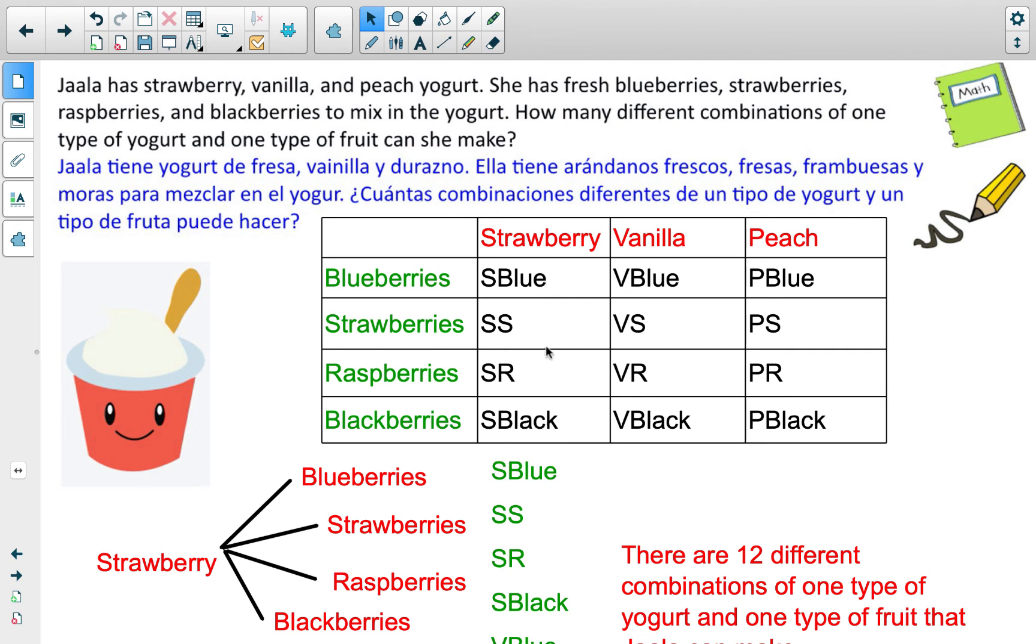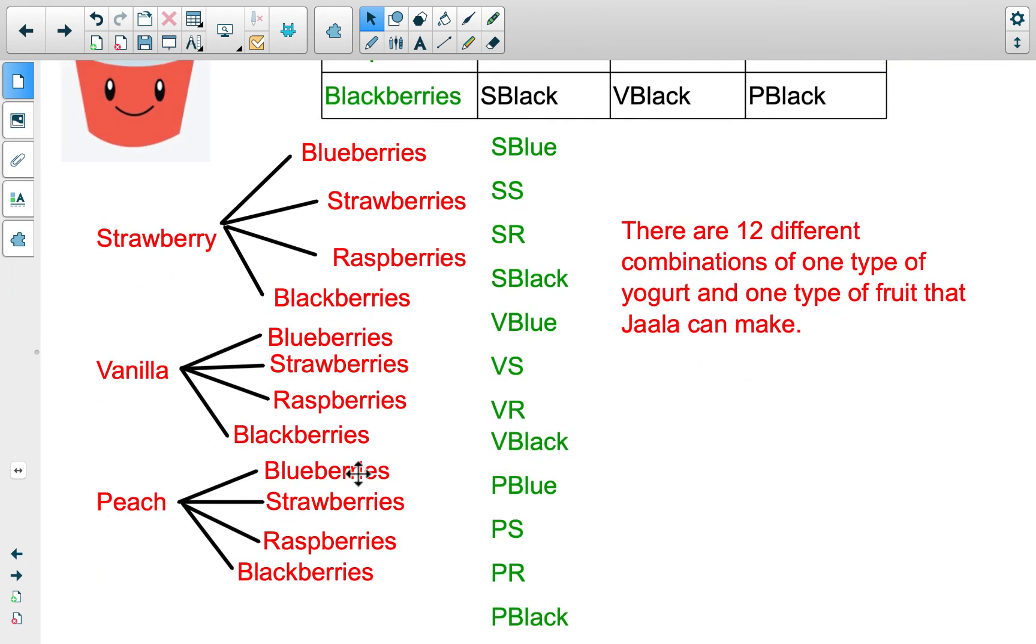If you used a table, what I did is I put the yogurt types across the top and the mixes down the left-hand side, and then I just combined. I needed to distinguish between blueberries and blackberries because they both started with B. So I put S blue and S black instead of just SB and SB twice because you don't want different things labeled the same way. You can see there's four here, four here, and four here, four, eight, 12 total. If you went the tree diagram approach, I have the three yogurts here and I have the four add-ons branching off from our original choice of yogurt. So we have four possible toppings with the strawberry, four with vanilla, and then four with the peach, which once again gets four, eight, and then 12.